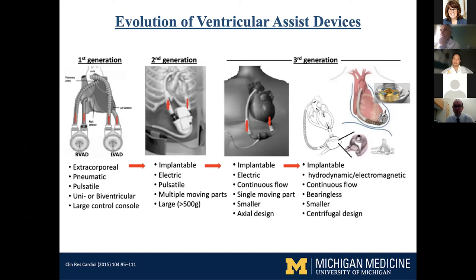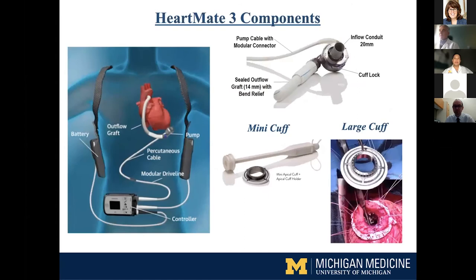Then came the hydrodynamic bearing, which instead of being axial is more like a centrifugal design — like a slingshot — where blood is shot outward. That was a different mechanism of continuous flow, but we still had problems with thrombosis and hemolysis. It was HeartMate III that arrived with a component basically suspended magnetically in midair, not touching anything. That prevented blood from warming up and causing thrombosis and friction, so thrombosis and hemolysis issues were much improved after that.